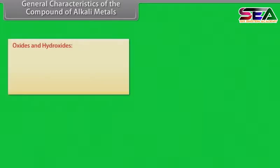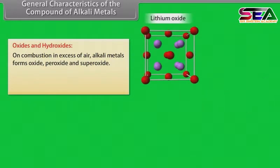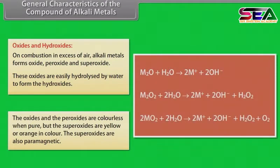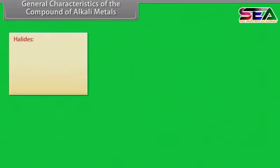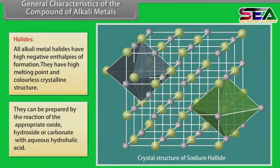On combustion in excess of air, alkali metals form oxides, peroxides and superoxides. These oxides are easily hydrolyzed by water to form the hydroxides. The oxides and peroxides are colorless when pure, but the superoxides are yellow or orange in color and are paramagnetic. All alkali metal halides have high negative enthalpies of formation, high melting points and colorless crystalline structure. They can be prepared by reaction of the appropriate oxide, hydroxide or carbonate with aqueous hydrohalic acid.